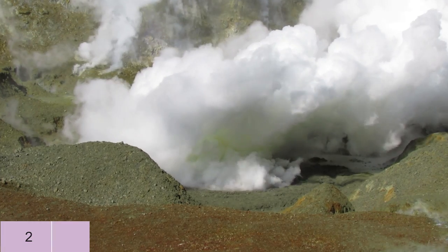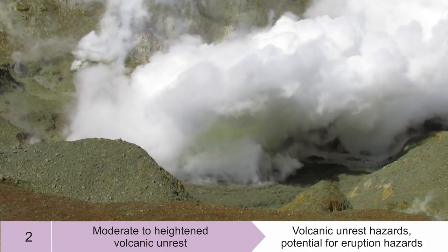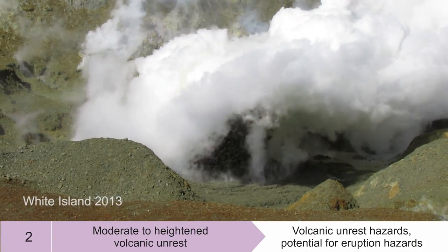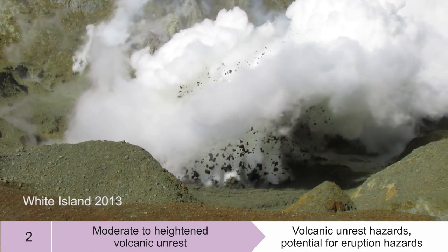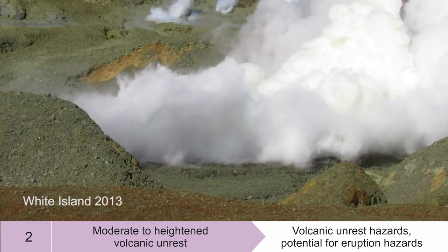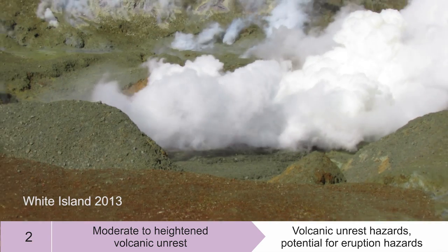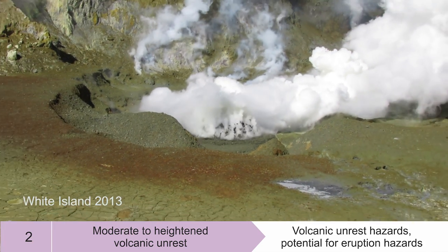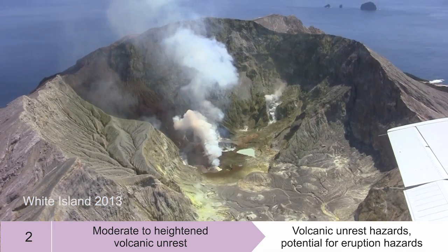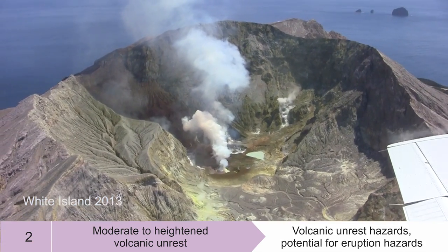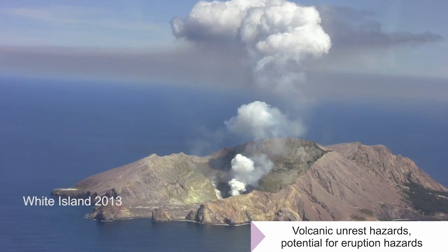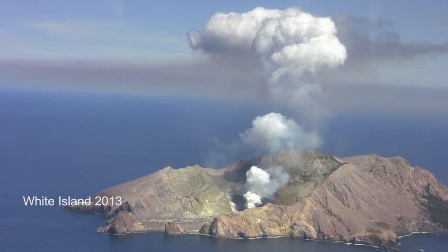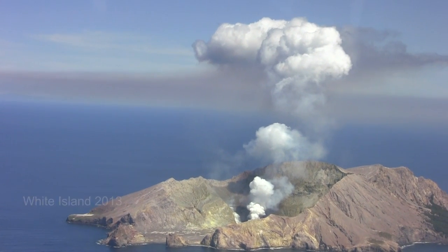A volcano at alert level two is experiencing moderate volcanic unrest. There will be some activity occurring on the volcano, it will be contained within the crater, and there will be volcanic unrest hazards and a potential for an eruption.